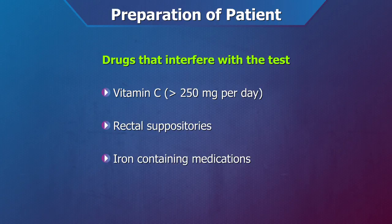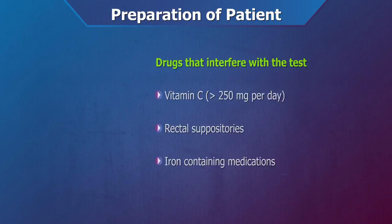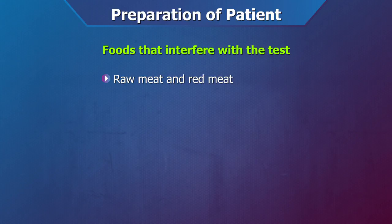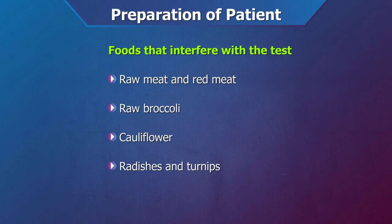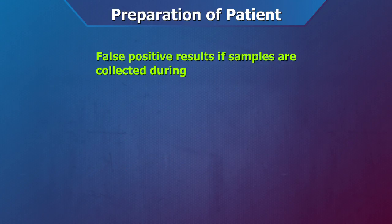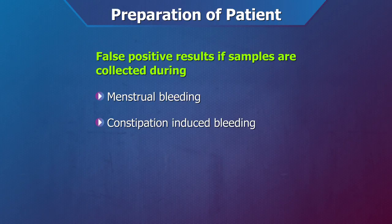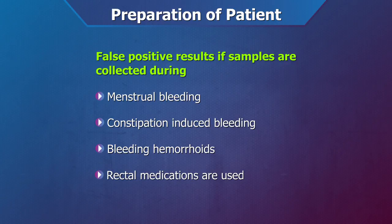For at least two days before and during the test period, all raw meat and red meat should be avoided. Raw broccoli, cauliflower, radishes, and turnips may cause false positive results and should be avoided. Stool samples collected during menstrual bleeding, constipation-induced bleeding, bleeding hemorrhoids, or when rectal medication is used may also cause false positive results.